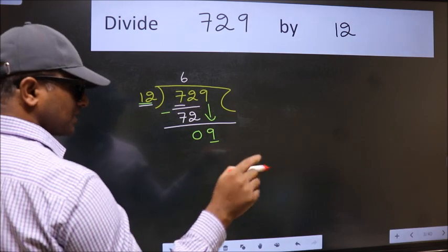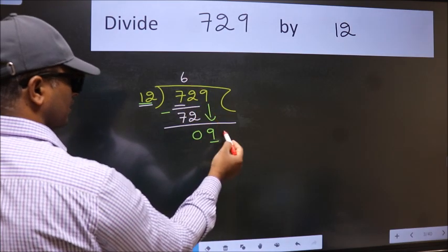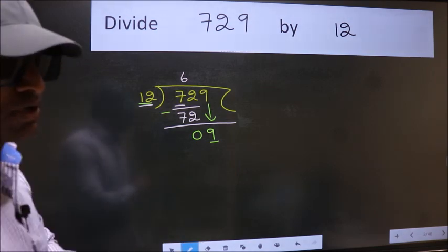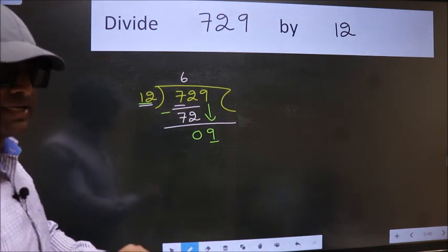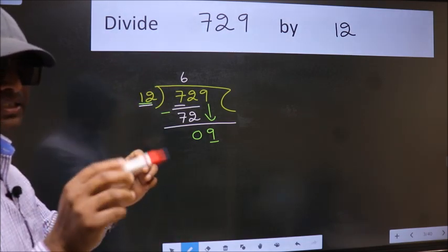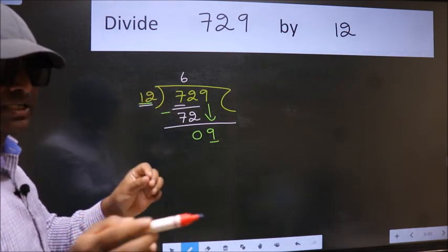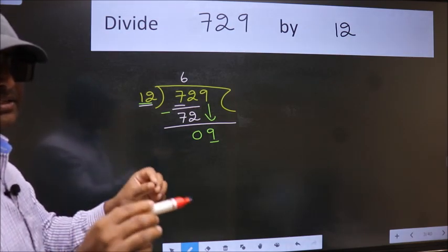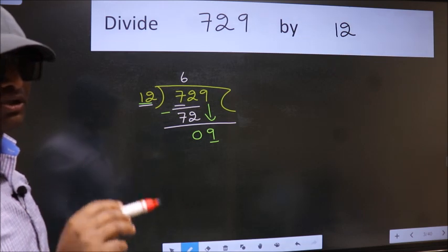And in the same step, you want to put dot, take 0, which is wrong. I repeat. Bring down the number and put dot, take 0. Bring down the number and put dot, take 0. Both at the same step. You should not do.